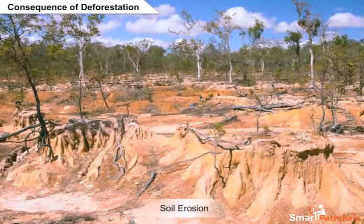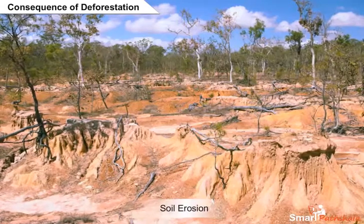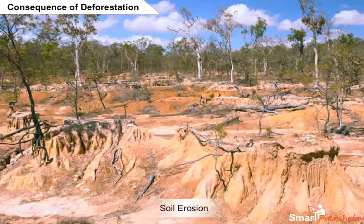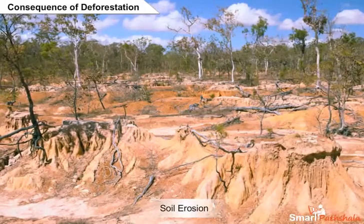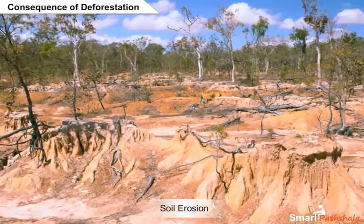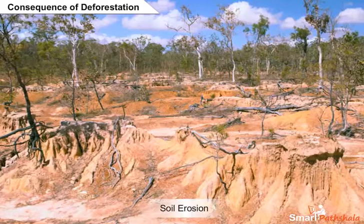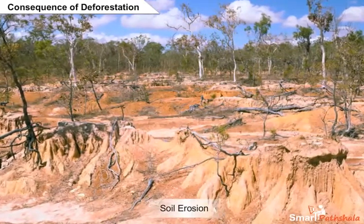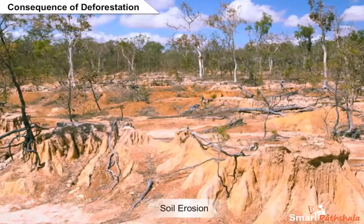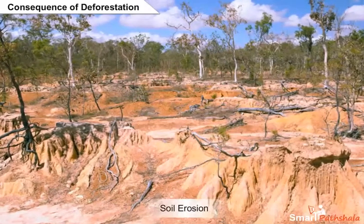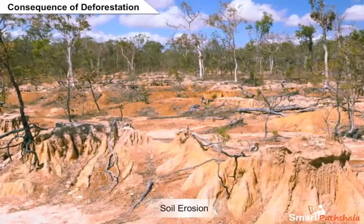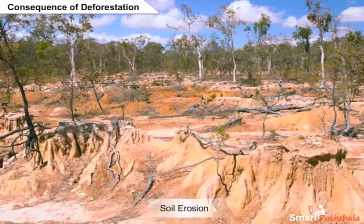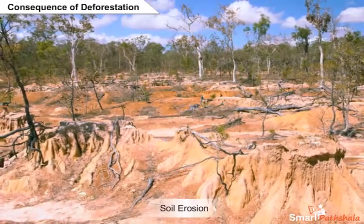Deforestation leads to changes in soil properties. The physical properties of the soil get affected, resulting in more soil erosion. Removal of the top layer of the soil exposes the lower, hard and rocky layers. This soil has less humus and is less fertile. Gradually, the fertile land gets converted into deserts — this is called desertification.